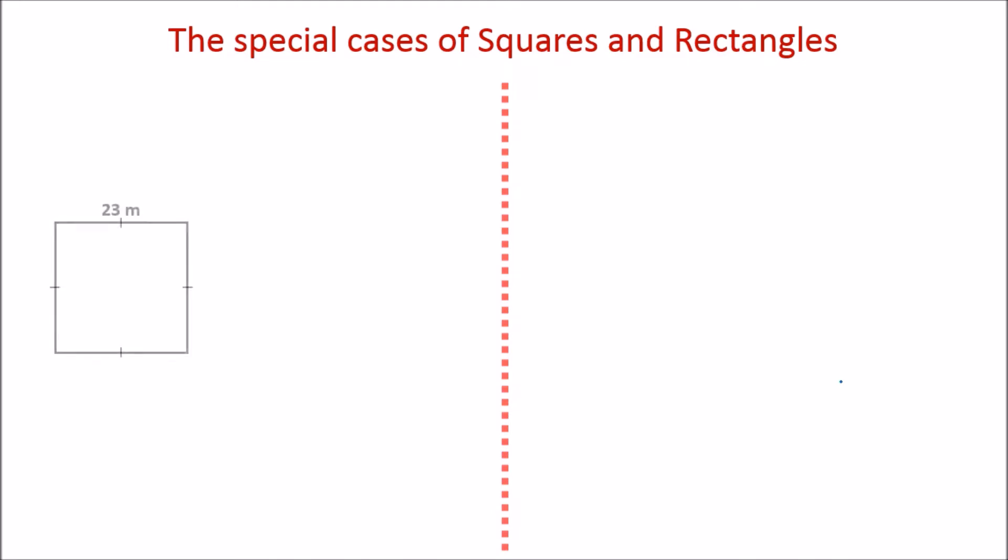So take a look at this square. The definition of something being a square is that each of the side lengths are exactly the same. So we've got 23 meters here, 23 meters here, and so on. So we could do perimeter equals 23 plus 23 plus 23 plus 23 and get 92 meters.